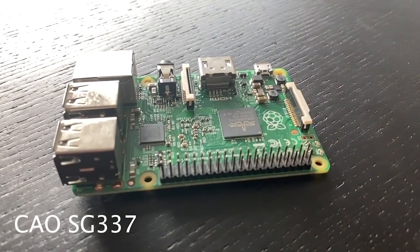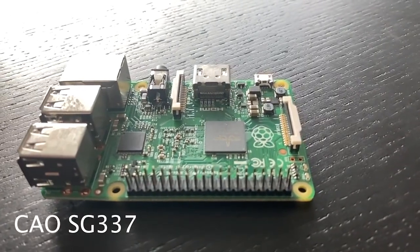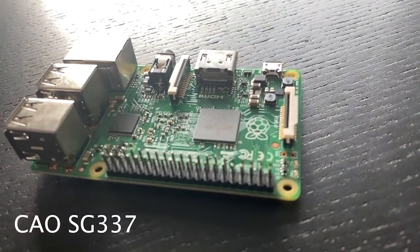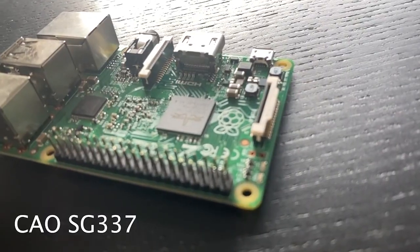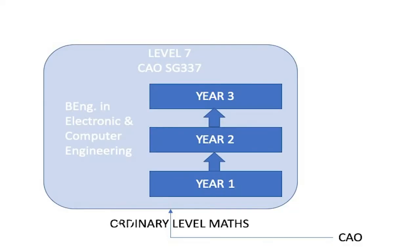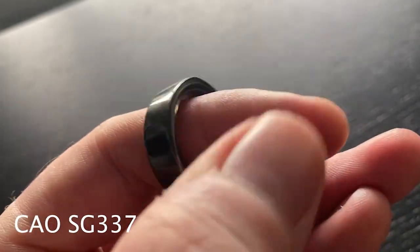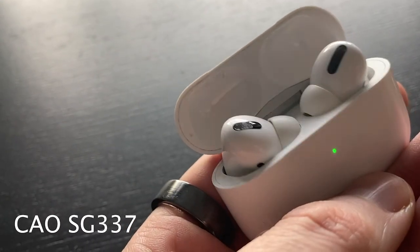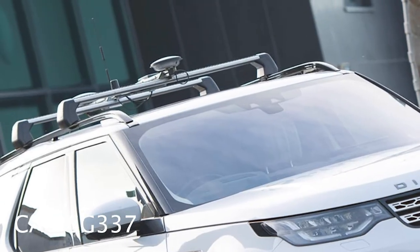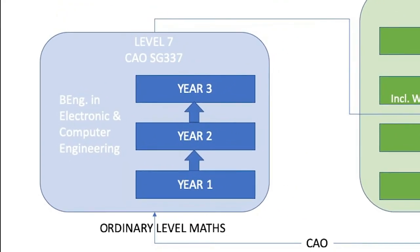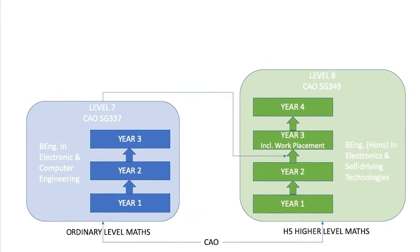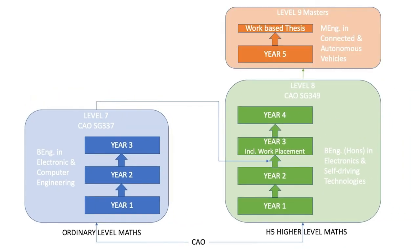If you are interested in technology or engineering but are not doing higher level maths, why not consider our Level 7 in Electronic and Computer Engineering? This is a three year program that looks at the design and development of embedded electronic systems — the medical devices that keep us healthy, the consumer devices that keep us entertained, or the control systems that keep us safe on the road. You can then progress to the Level 8 in Electronics and Self-Driving Technologies, and from there to the masters. Check out the link below for more information.